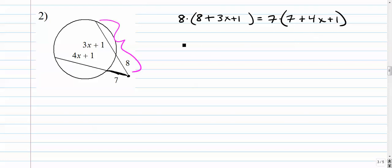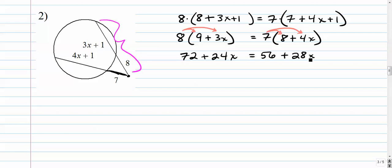We've got to do some simplification. We'll go inside our parentheses. 8 plus 1 is 9. Inside our parentheses 7 plus 1 is 8. We're going to distribute. So we get 72 plus 24x equals 56 plus 28x.